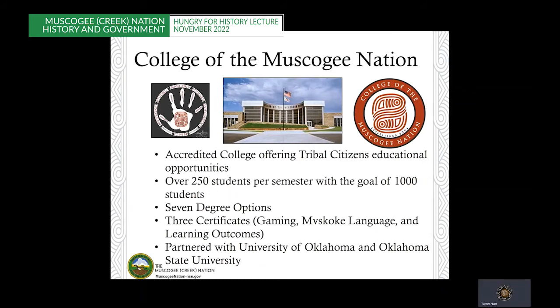A lot of folks don't know that our nation has a college, so I want to take a moment and recognize our nation's Institute of Higher Learning. The College of Muskogee Nation is an accredited tribal college designated to educate students in seven different degree paths. The college recently added an associate's degree of natural resources to provide education in sustainable management of land and natural resources. This college also offers a number of certificates, including gaming, language, and learning outcomes. Situated very near to the Oklahoma State Institute of Technology in Okmulgee, the college has a special partnership with both Oklahoma State University and the University of Oklahoma to provide educational opportunities that benefit Muskogee citizens.